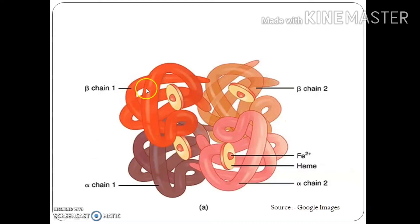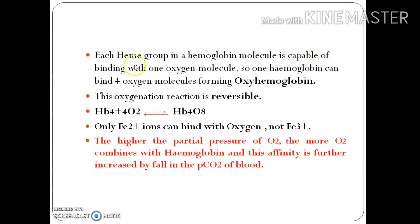This diagram shows the structure of hemoglobin with two alpha chains, each with heme groups having Fe²⁺ at the center — this is where oxygen binds. There are four heme groups, meaning four Fe²⁺ ions, so a single hemoglobin molecule can bind four oxygen molecules. Each heme group is capable of binding one oxygen molecule. This oxygenation reaction is reversible, so oxygen can dissociate later. Only Fe²⁺ ions can bind oxygen, not Fe³⁺ — that is why Fe²⁺ is so important.